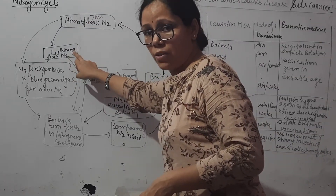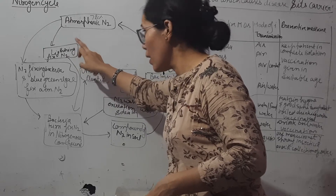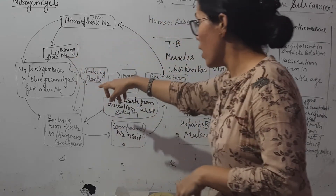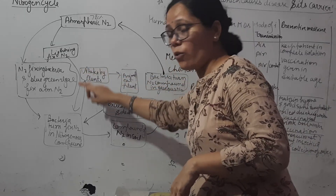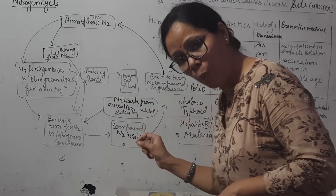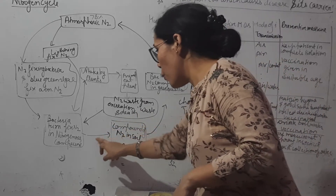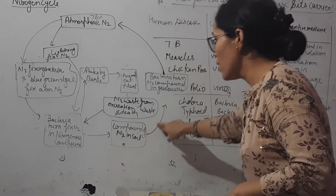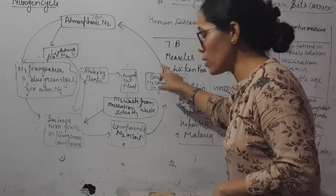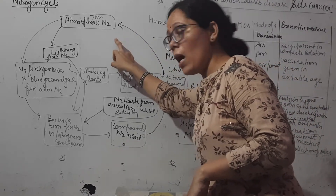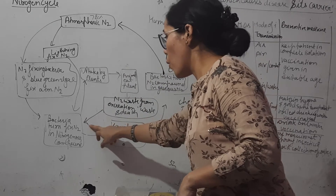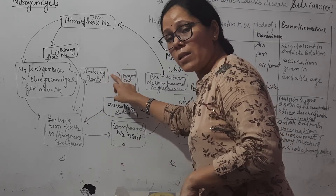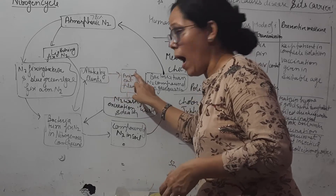Another form of nitrogen fixation occurs through the lightning process — atmospheric nitrogen is fixed by lightning. This fixed nitrogen is then converted into nitrogenous compounds by bacteria, which go into the soil. These compounds are used by plants, which are then eaten by animals.